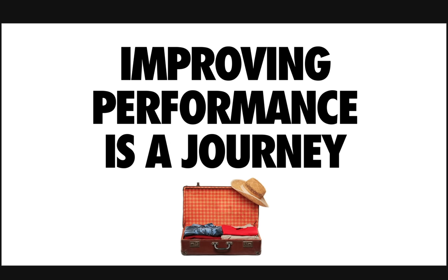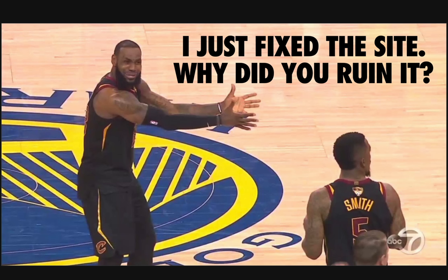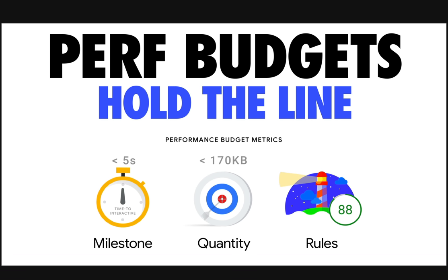Improving performance is a journey — there are lots of small changes that can lead to big gains. It's not uncommon to see teams fix performance only for it to regress soon after due to feature development. This is one of the reasons why I encourage folks to invest in performance budgets. Performance budgets keep everybody accountable and on the same page, and they enable a culture of shared enthusiasm for improving the lived user experience. Teams with budgets can sometimes also find it easier to track and graph their progress. We have good tooling in places like Lighthouse for performance budgets, and lots of good third-party services also support these as a feature.